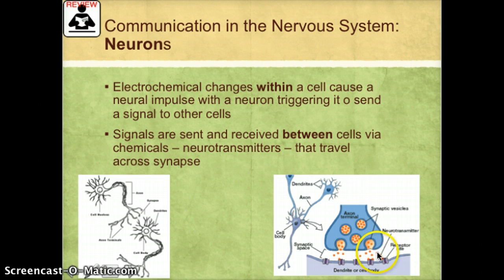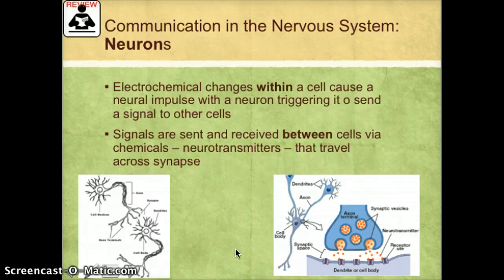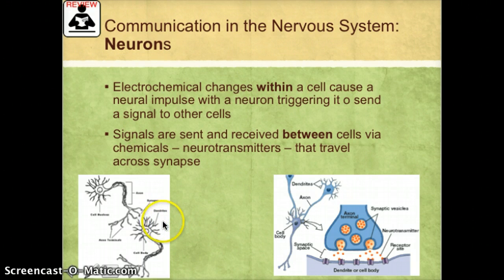When the neuron is sending a signal, the neurotransmitters are released into the synapse, or empty space. They float across this empty space that is filled with fluid, bind to the surface of the receiving dendrite, and this triggers a change in the cell membrane of the receiving neuron. This change allows positively charged ions from the fluid outside the cell to flow into the cell body.